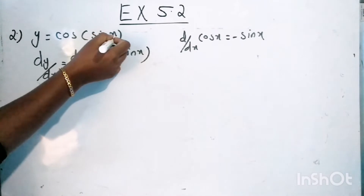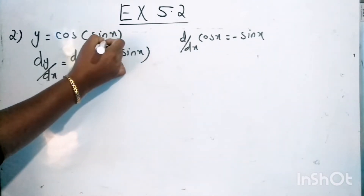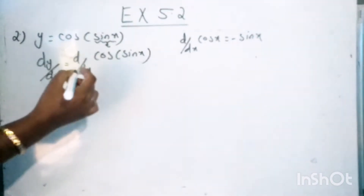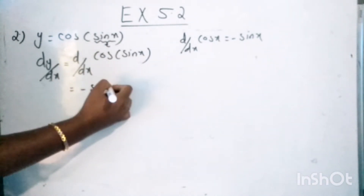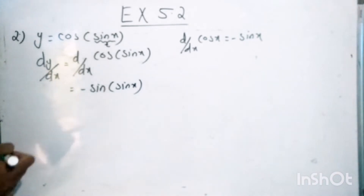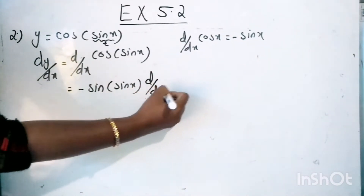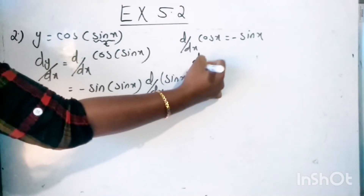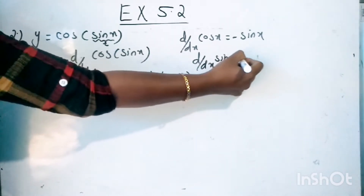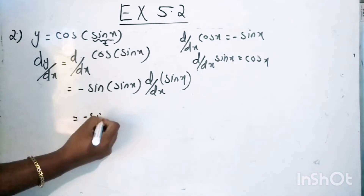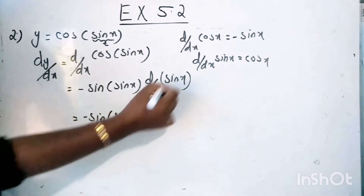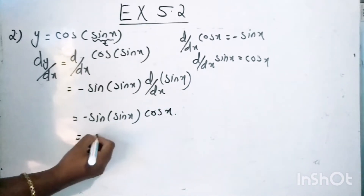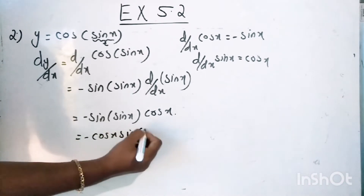Instead of x, here we have sin x. So just consider it as t; then the derivative of cos t we will get as minus sin t. The value of t is sin x, so we have minus sin of sin x. Now we need to find out the derivative of sin x because instead of x we have sin x, and d by dx of sin x is equal to cos x. So this gives minus sin of sin x into cos x, or you can write it as minus cos x into sin of sin x.